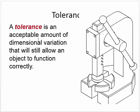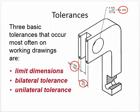A tolerance is an acceptable amount of dimensional variation that will allow an object to function correctly. There are three basic types of tolerances: limit dimensions, bilateral, and unilateral.